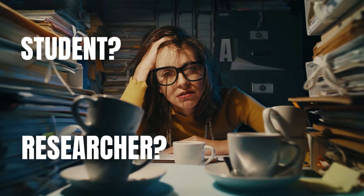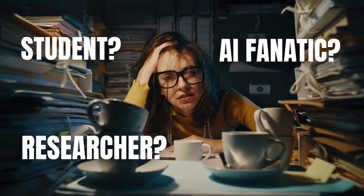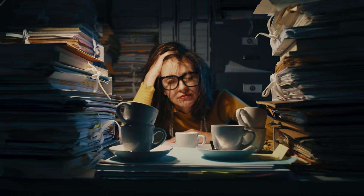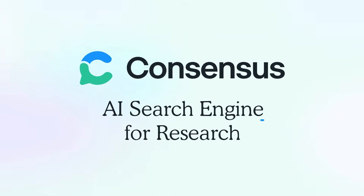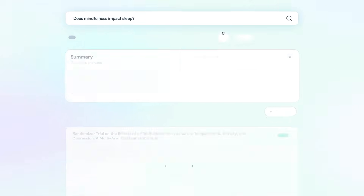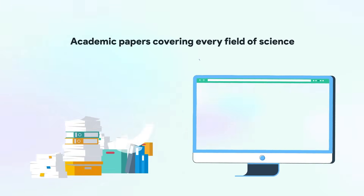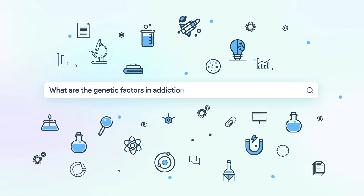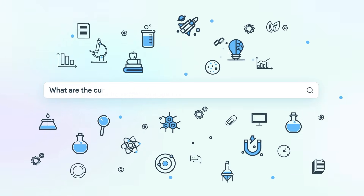Before we dive in, if you're a student, researcher, or just an AI fanatic like me, struggling with stacks of papers and a cluttered desk, you'll love the sponsor of today's video, ConsenSys. ConsenSys is an AI-powered academic search engine that searches over 200 million peer-reviewed papers. ConsenSys saves you a lot of time and gets you fast and reliable, science-backed results.